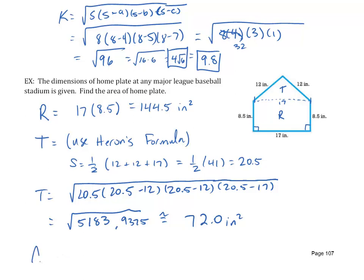So then the total area would be R plus T, which is 144.5 plus 72.0, which gives me 216.5 square inches. And that completes this lecture on the area of a triangle.